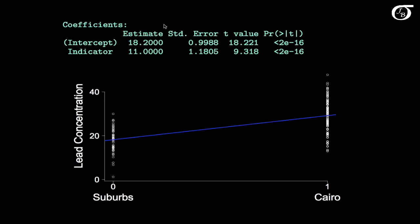Here's the output and the least squares regression line is given here, and I plotted it in blue here. So we could say that y hat is equal to 18.2 plus 11.0 times x, where x is our indicator variable, 1 for Cairo, 0 for the suburbs.